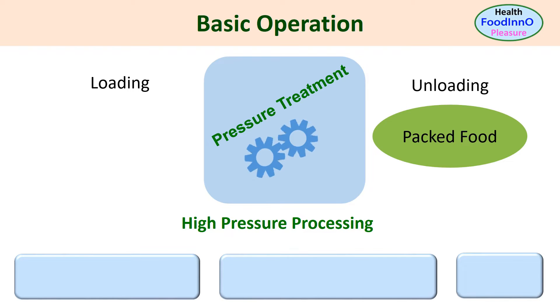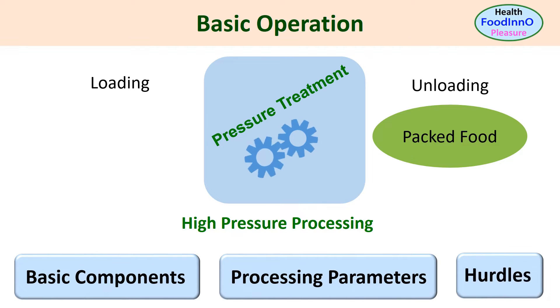In operations we need to know three important aspects: basic components, processing parameters, and additional hurdles.